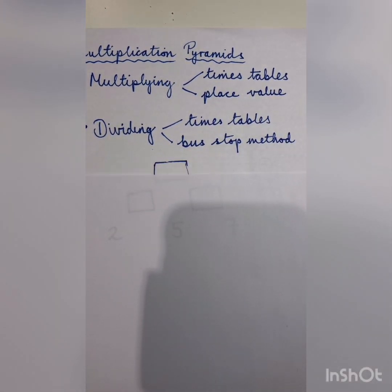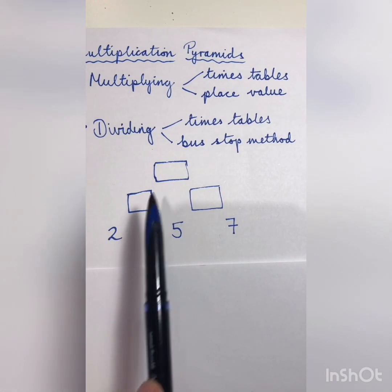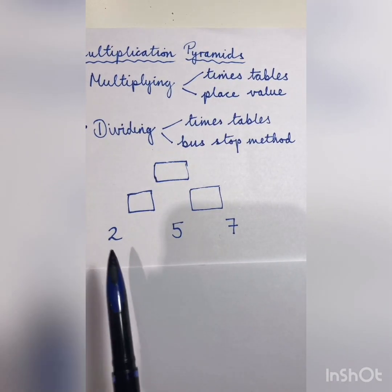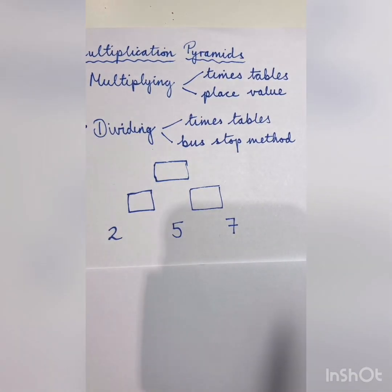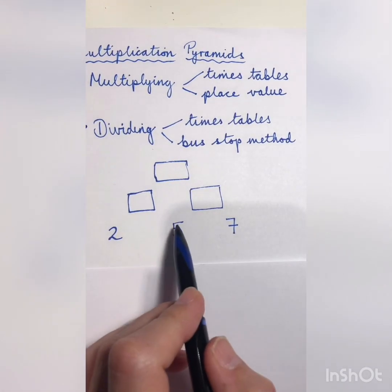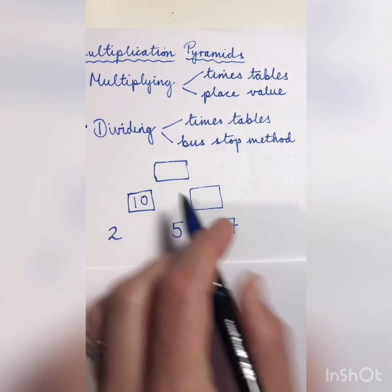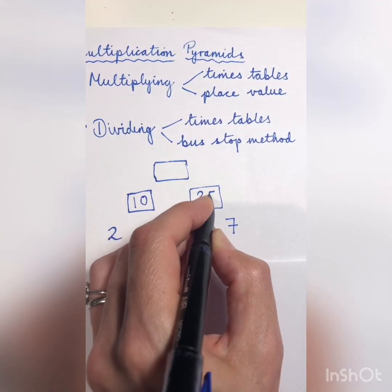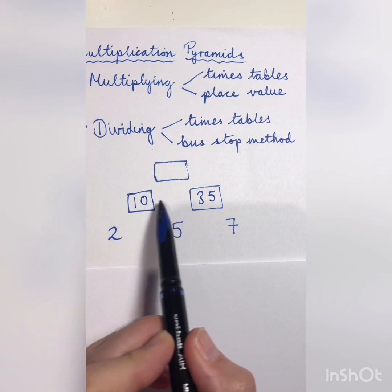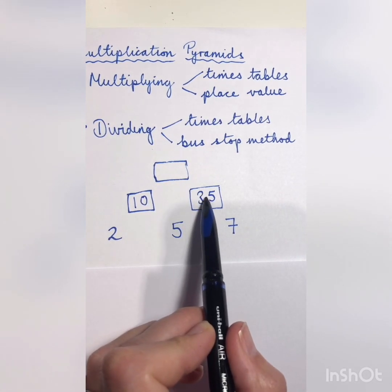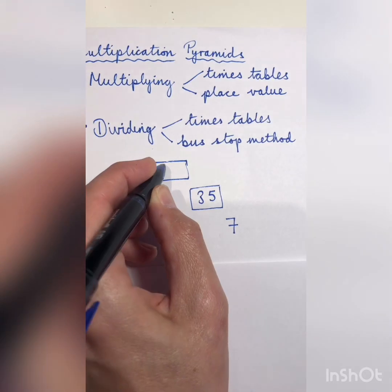Let's have a look at the first multiplication pyramid. You can see why it's called a pyramid — it's shaped a bit like a pyramid, even though my boxes are not particularly even. The easiest level is when you have three numbers at the bottom, and you have to work out the numbers above. To do that, you times the two numbers that are next to each other together — so two times five is ten, and five times seven is thirty-five. And to work out the top number, you just multiply these two numbers next to each other. As we know from place value, we just do thirty-five times ten — it just gets ten times bigger and becomes three hundred and fifty.